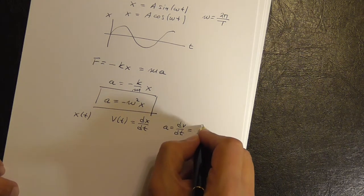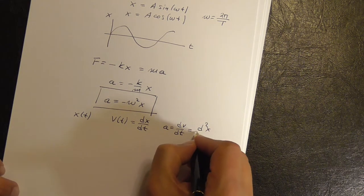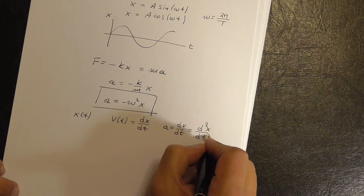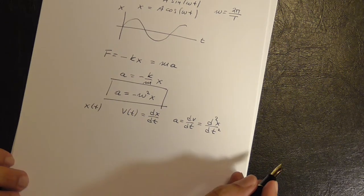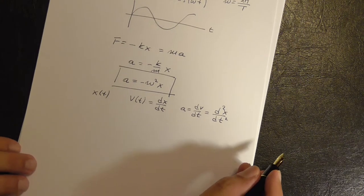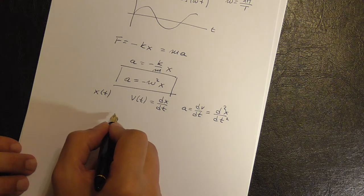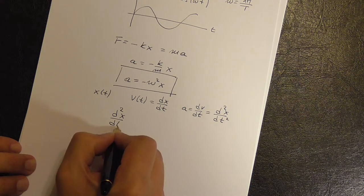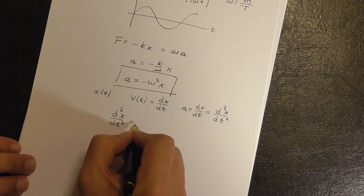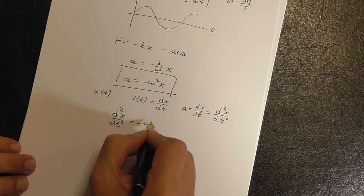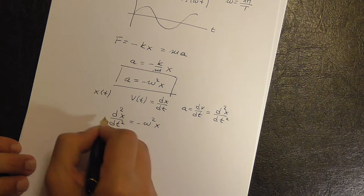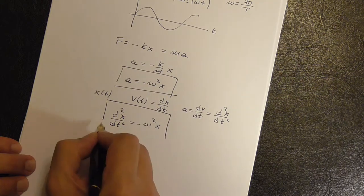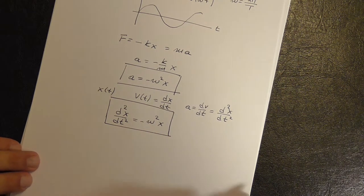So this is the second derivative of X with respect to time is equal to minus a constant times X. And this is now a differential equation.